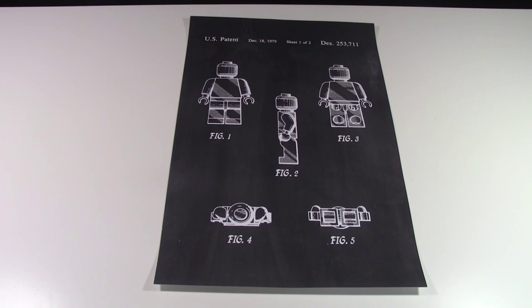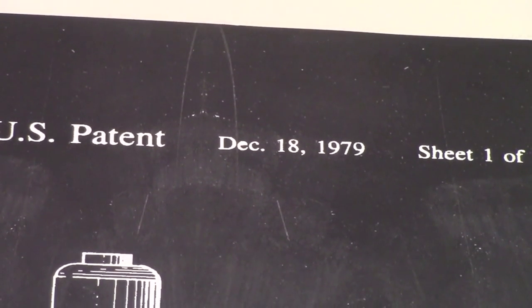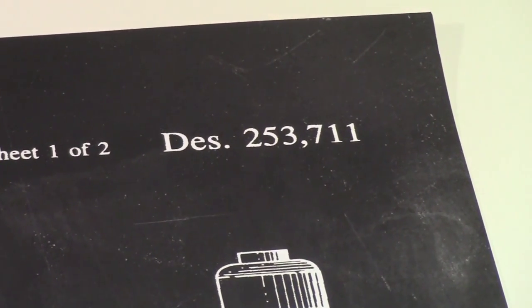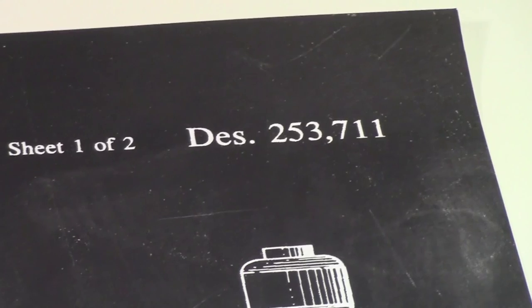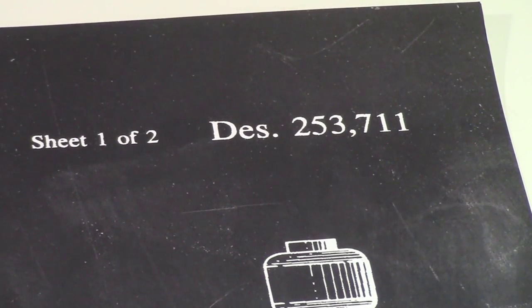The first patent I'm going to show you is the minifigure patent. There's five different figures of the minifigures. It says US Patent. It has the date December 18, 1979, Sheet 1 of 2, and DES 253,711.